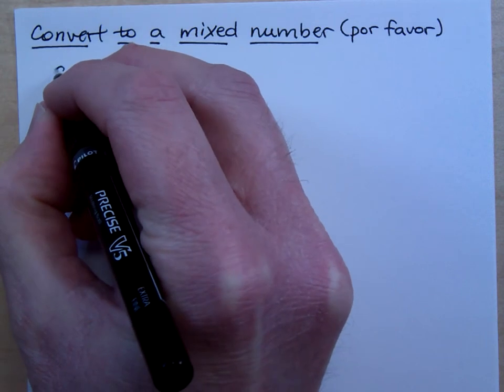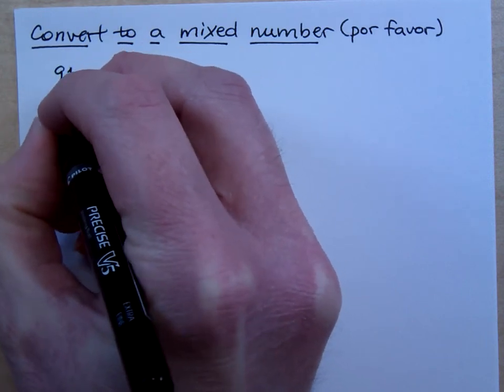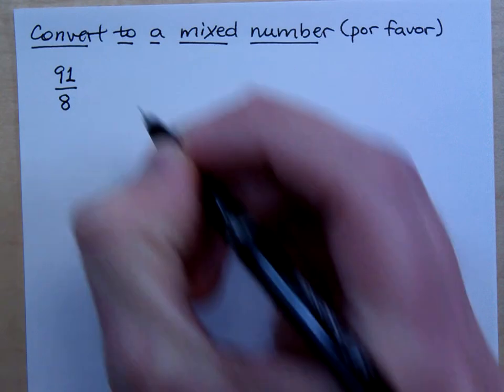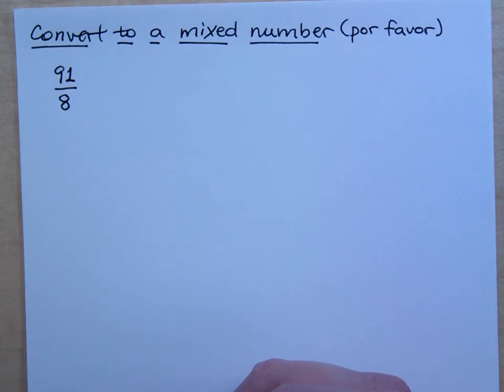So if I have, I don't know, let's go crazy here. If I say I have 91 eighths, how do I convert that to a mixed number?